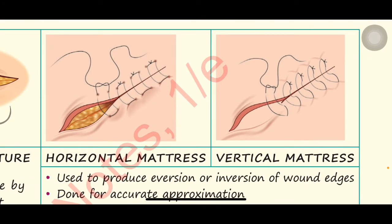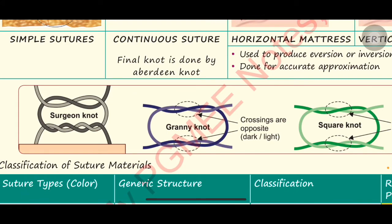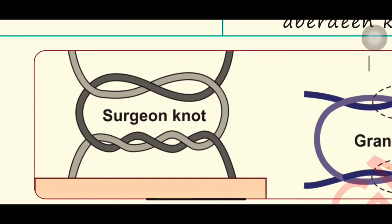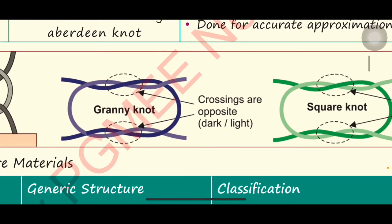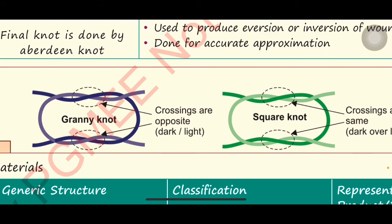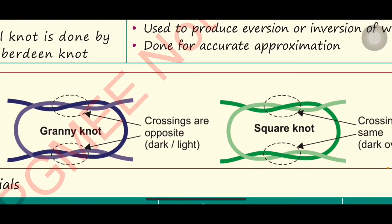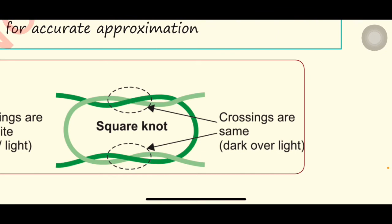Know the difference between these two sutures and how to identify them. Next is the surgeon's knot, granny knot, and square knot. In the surgeon's knot, there will be two loops on the upper side and one loop on the lower side. The main confusion comes between the granny knot and the square knot. In a granny knot, the crossings are opposite — that is, the crossings between the dark and light bands are opposite; in the upper loop the dark band is superficial and in the lower loop the white band is superficial. In the square knot, the crossings are the same colour — both are dark over light.